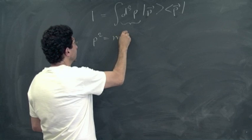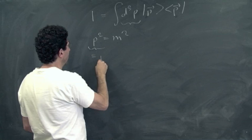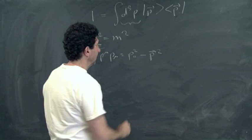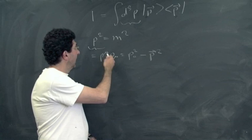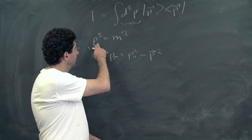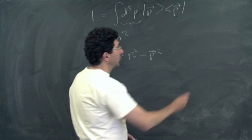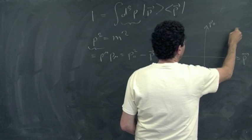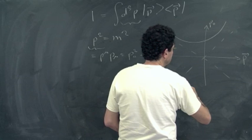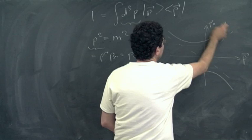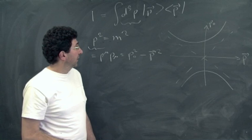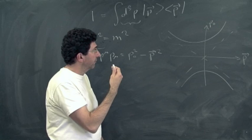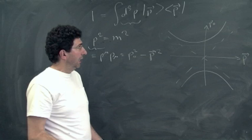P squared equals M squared, where P squared means P_mu P^mu = P_0^2 minus |P|^2, is the Lorentz invariant square of the four-momentum. If we plot P^0 versus |P|, the solutions form two hyperboloids. We want to integrate only over the top hyperboloid. The Lorentz invariant way is to integrate over all four-momenta with a delta function (P^2 - M^2) and a theta function theta(P^0), restricting to positive energy. Proper Lorentz transformations preserve the sign of the time component of any four-vector.